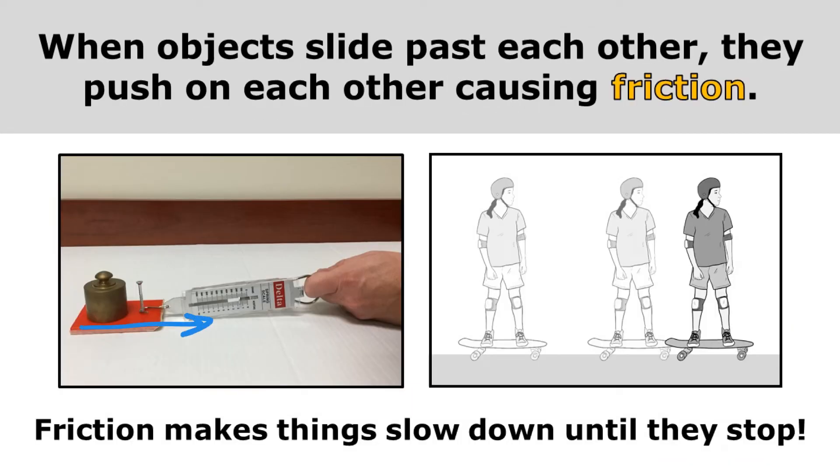When objects slide past each other, they push on each other, causing friction. Friction is what makes things slow down until they stop.